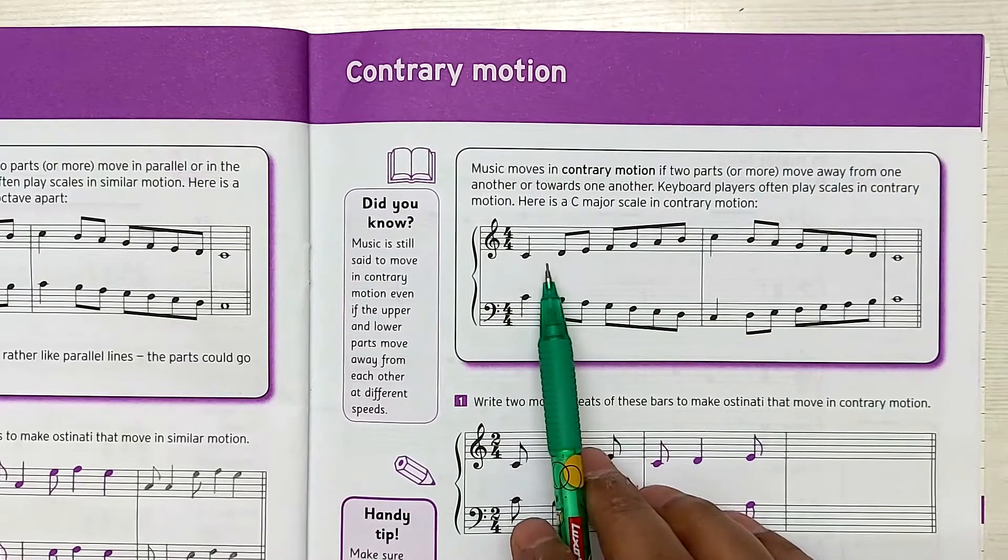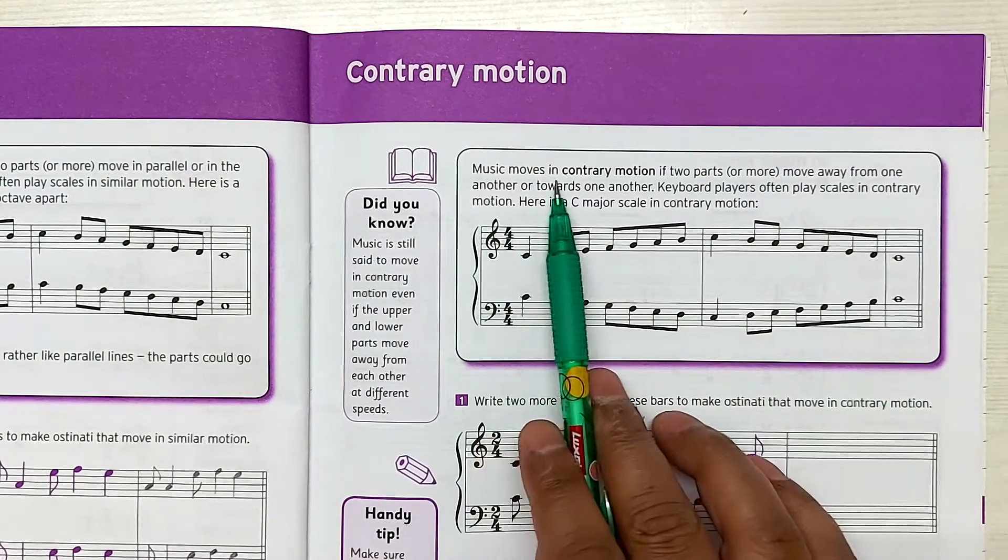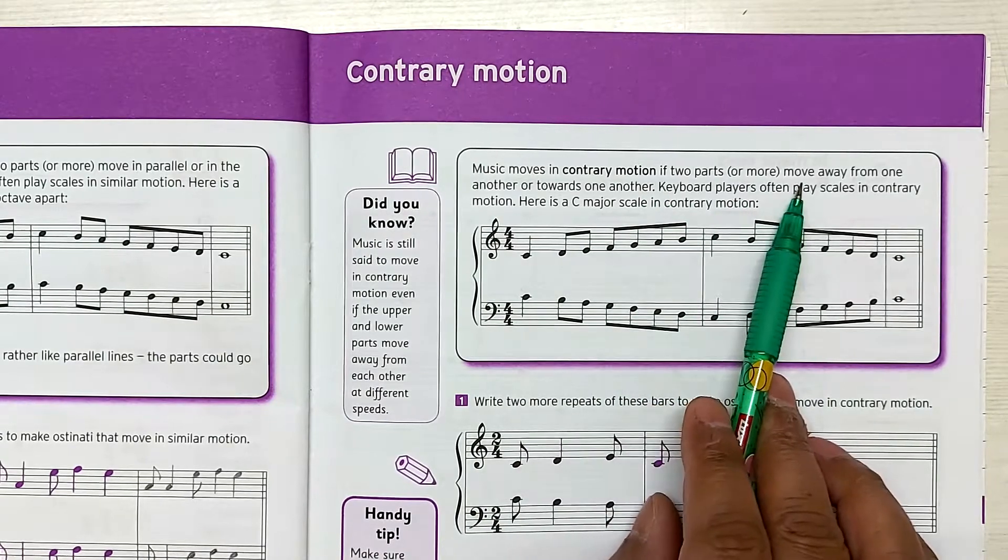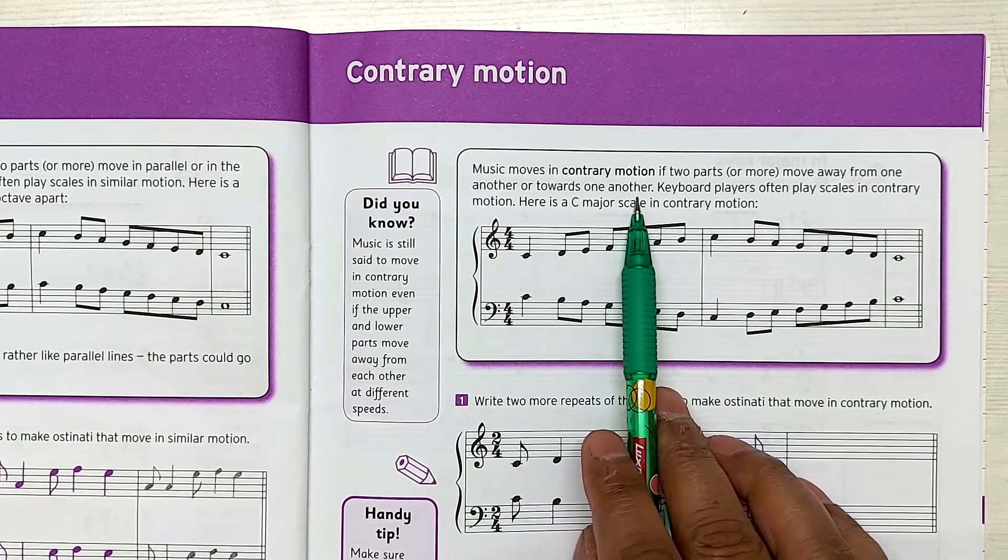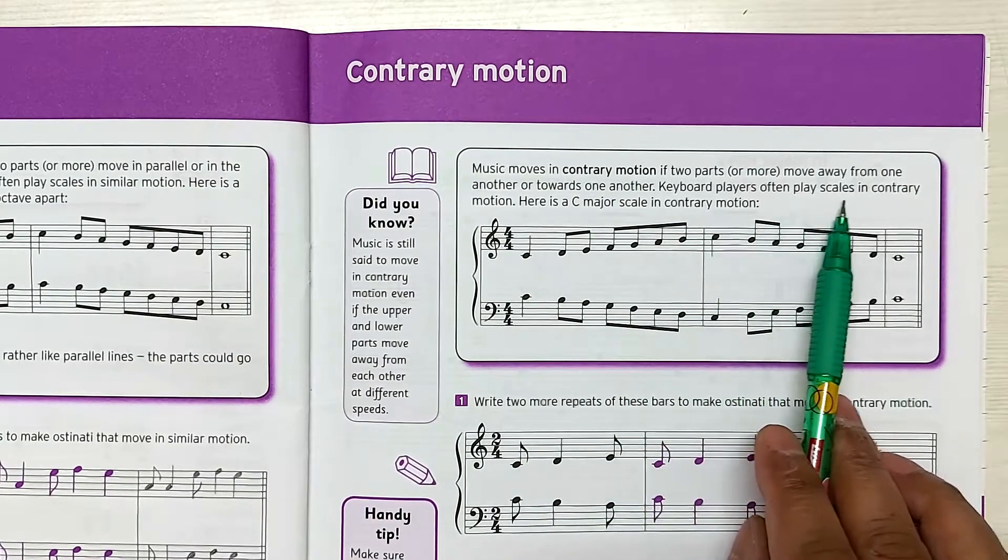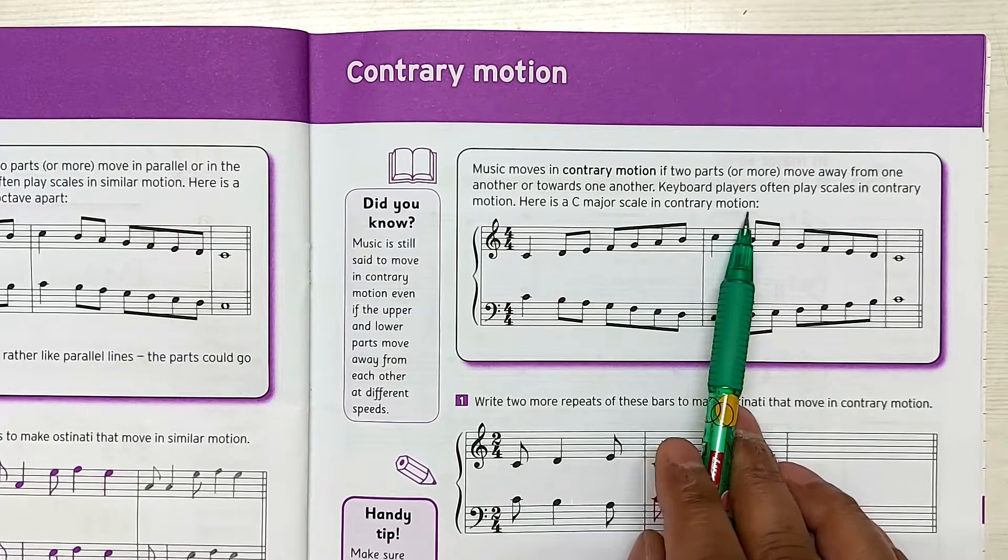It's just that you go in opposite directions. So music moves in contrary motion into parts that move away from one another or towards one another. Keyboard players often play scales in contrary motion. Here is a C major scale in contrary motion.